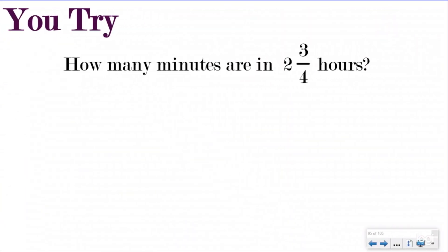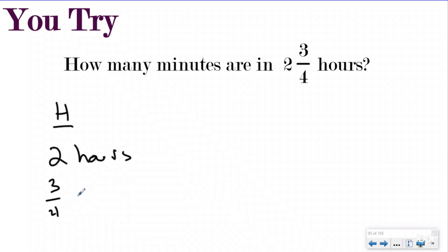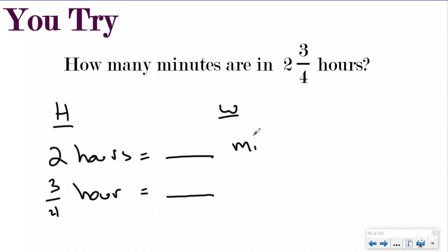Here we have our 'you try.' If you're ready to try this one by yourself, go ahead and push pause, try it, and then push play to check your answer. If you need to do it with me one more time, that's okay — you can write this one down with me as another 'we do.' The first thing I want to do is my have and wanted chart. I had two hours and then three-quarters of another hour, and I want to turn this into minutes because that's what the question is asking.